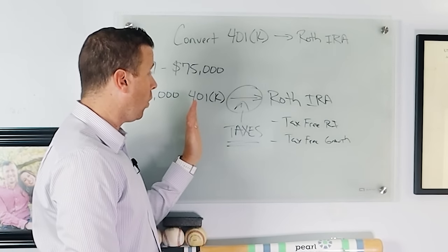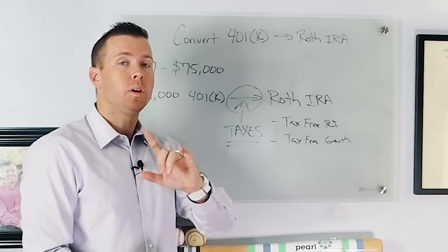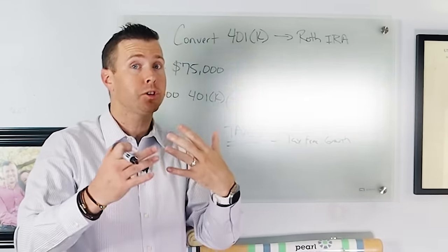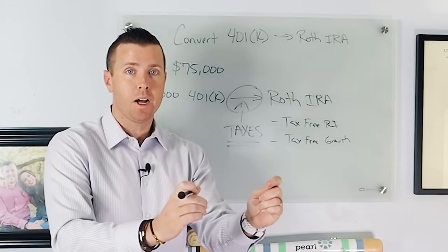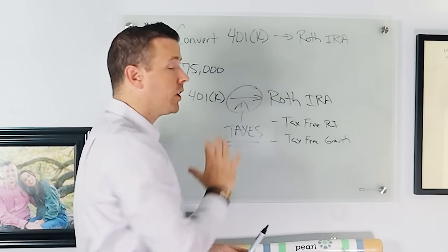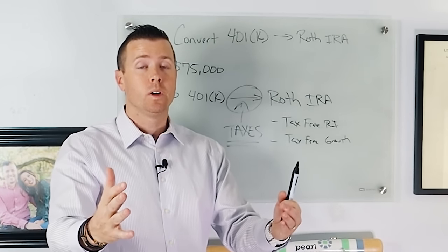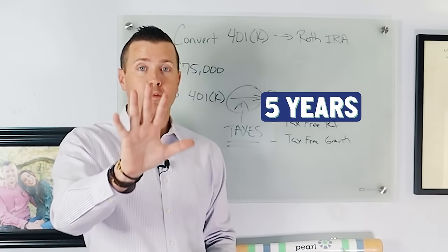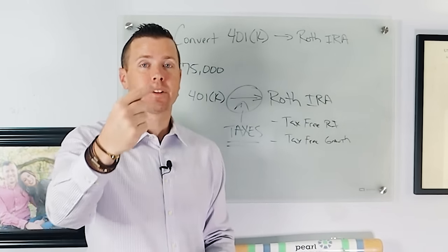So moving it from your old 401k to a Roth IRA is doing a Roth IRA conversion. Not a contribution, but a conversion, converting money. Now, if you do a Roth IRA conversion, the only rule that you really have to follow is you have to let that Roth IRA sit for five years. And it's got to be for each consecutive conversion.